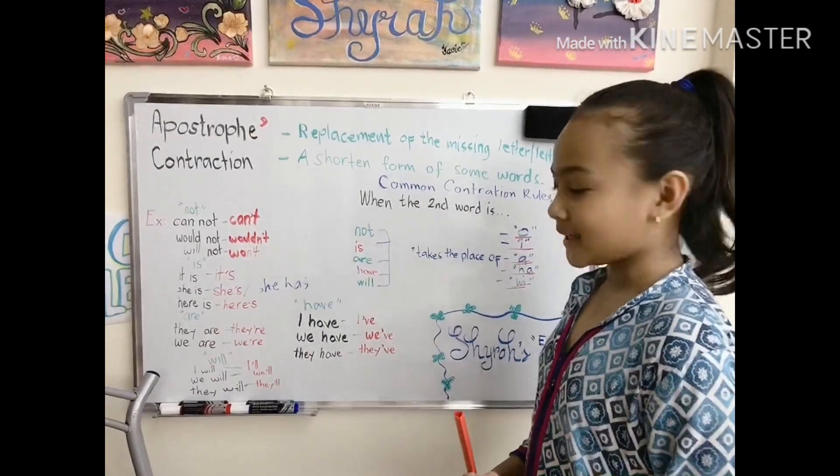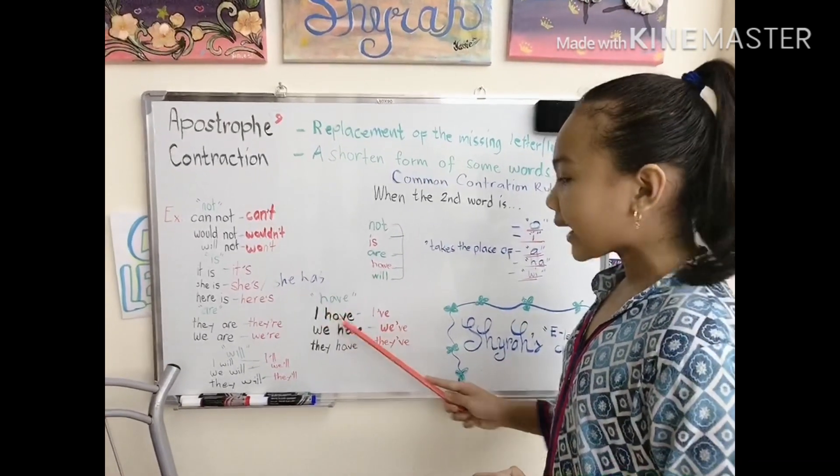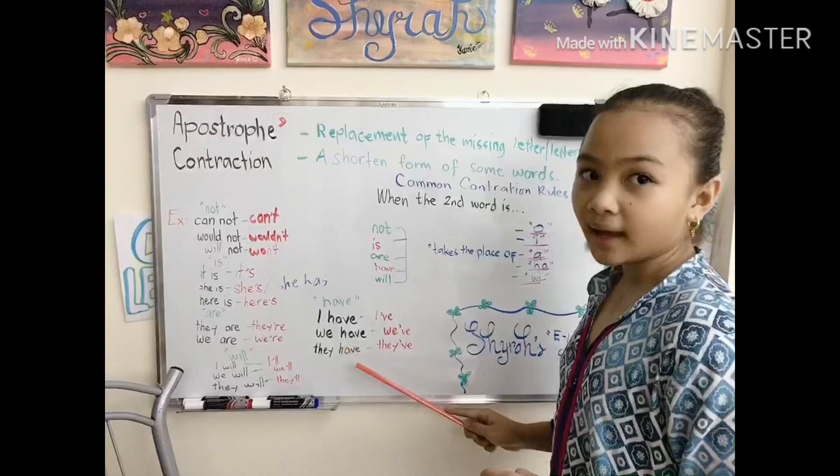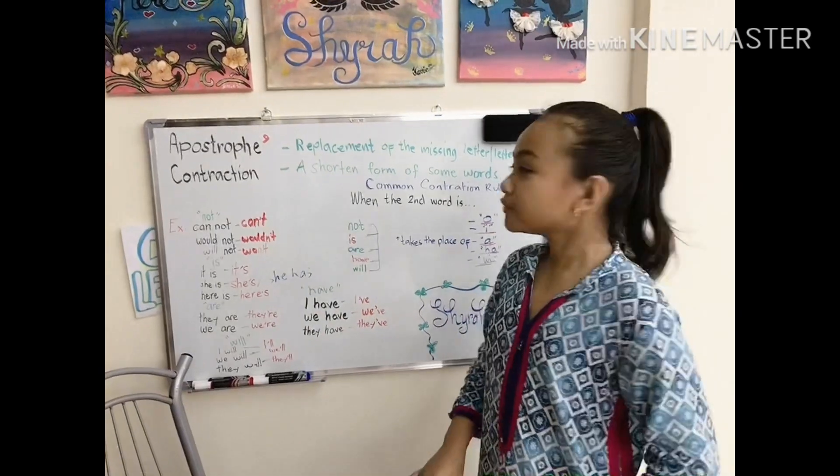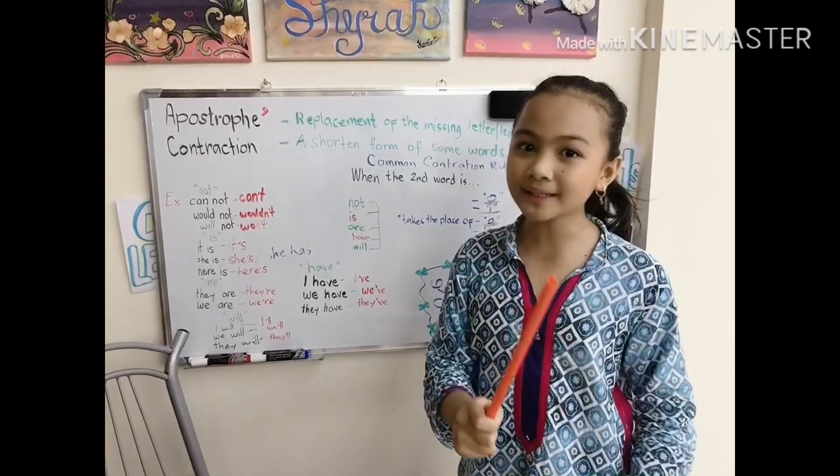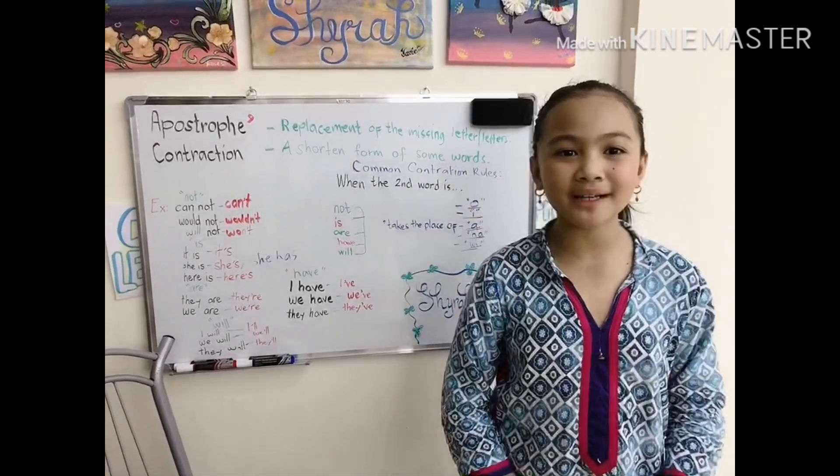And lastly the second word have. I have becomes I've. We have becomes we've. They have becomes they've. Don't forget how important the apostrophe is. Don't forget to use it. I hope you learned something everyone. Bye for now.